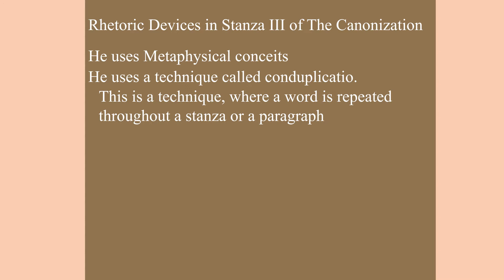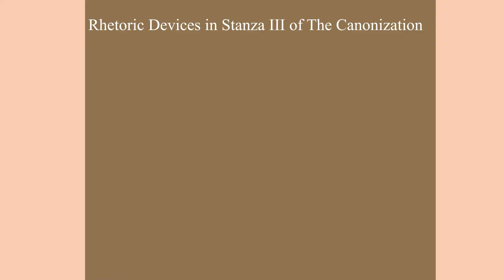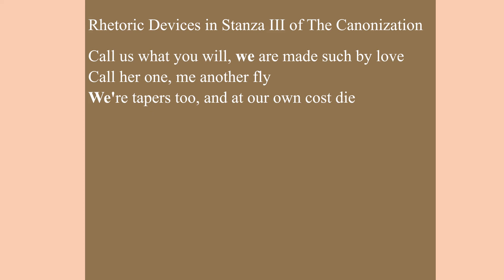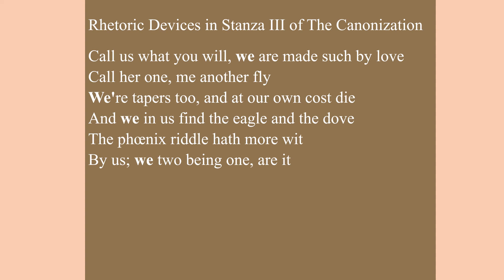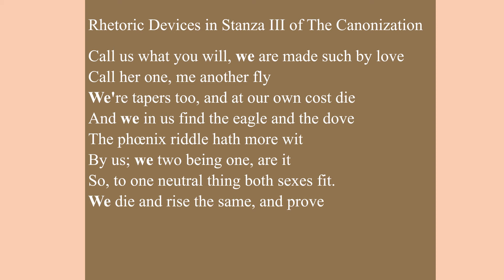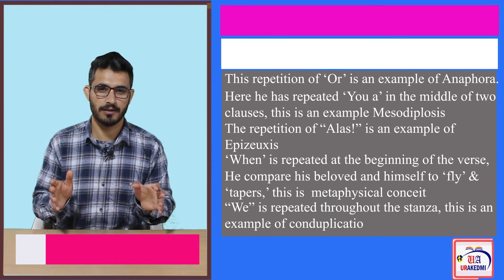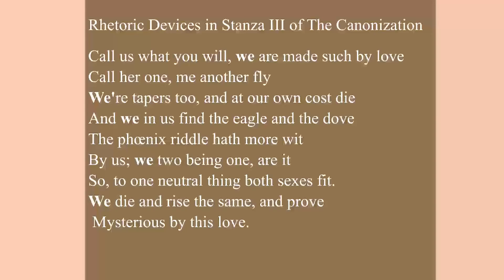Conduplicatio is a technique where a word is repeated throughout a stanza or paragraph. Reading the stanza: 'Call us what you will, we are made such by love. Call her one, me another fly. We are tapers too and at our own cost die. And we in us find the eagle and the dove. The phoenix riddle hath more wit by us. We two being one are it, so to one eternal thing both sexes fit. We die and rise the same and prove mysterious by this love.' John Donne repeats the word 'we' throughout this stanza — that repetition is known as conduplicatio.